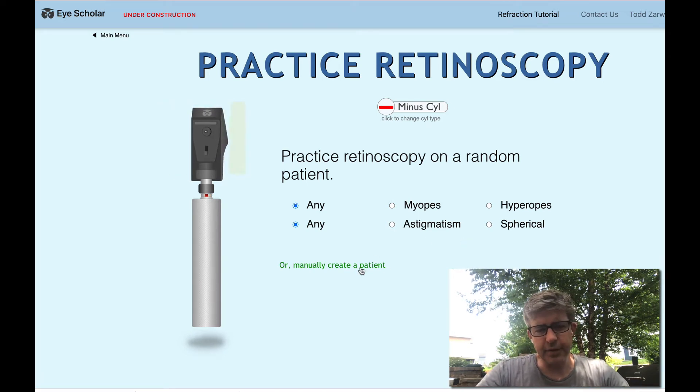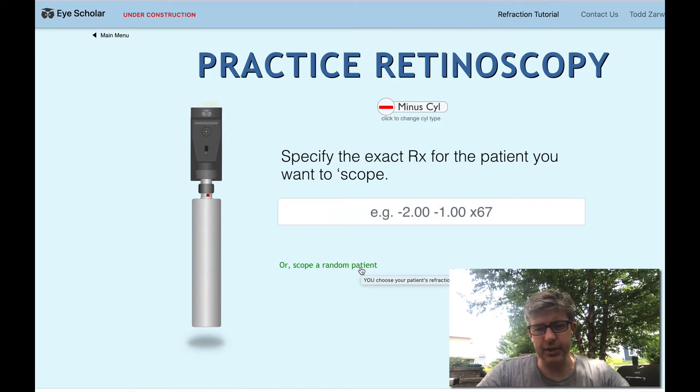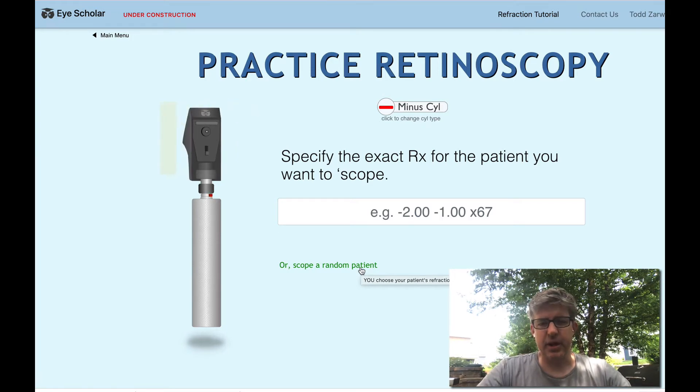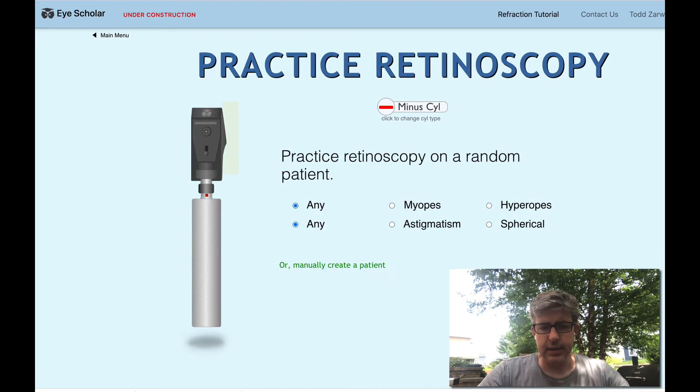You also have the option of just manually creating a patient. So you can say I want to scope a minus seven minus four axis 93 and that's the patient you'll get. You won't be surprised at the outcome but it'll give a chance to practice on something specific if you want to. But let's just do a random patient.